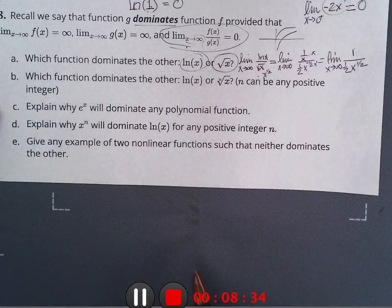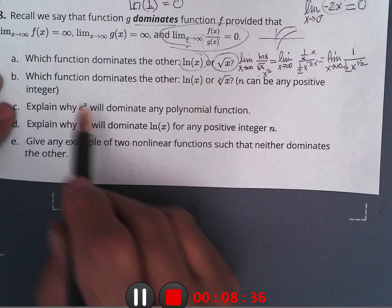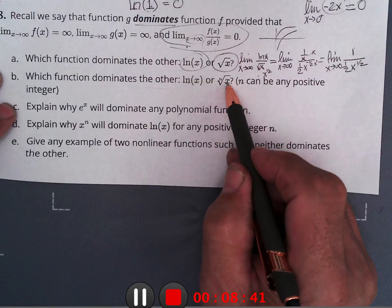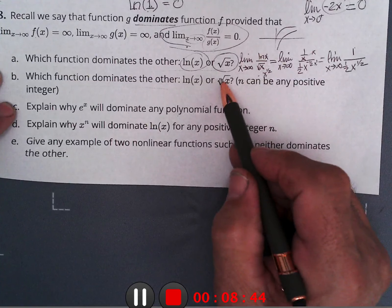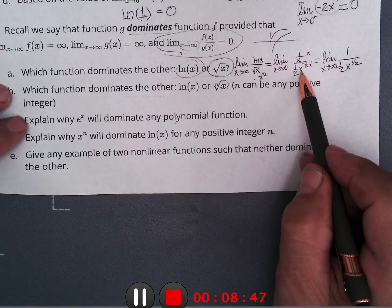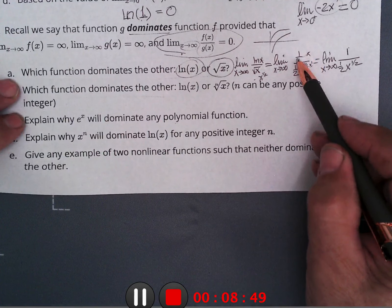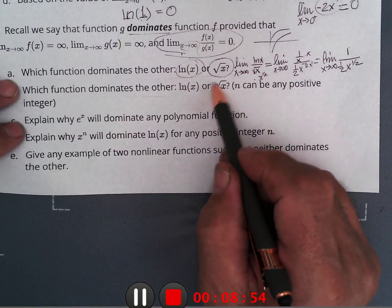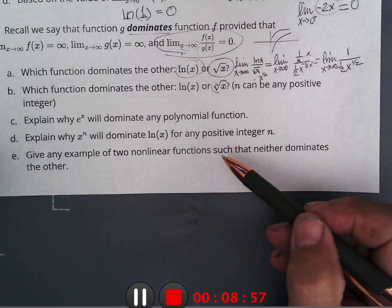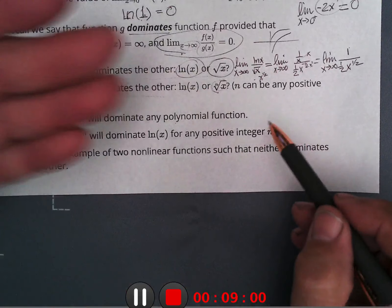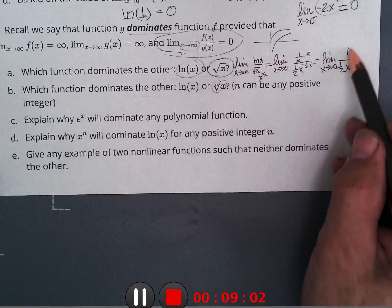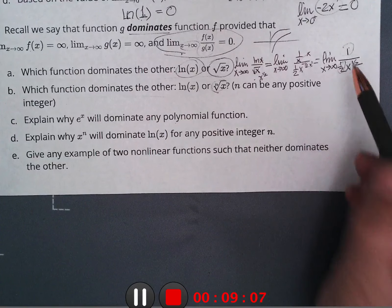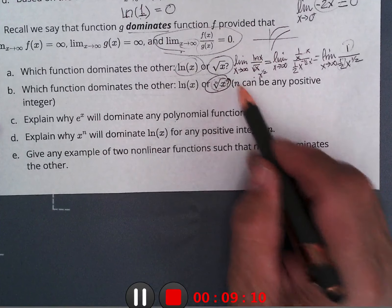Which function dominates: ln x or the n-th root of x? For the same reason just explained, ln x produces 1/x — putting another x in the denominator. Even though the power of the n-th root is reduced by 1 when taking the derivative, the x we bring down increases it back up, leaving a constant in the numerator and something times x in the denominator. So the limit goes to zero, meaning the n-th root of x still dominates ln x.